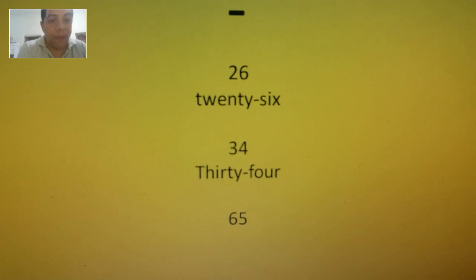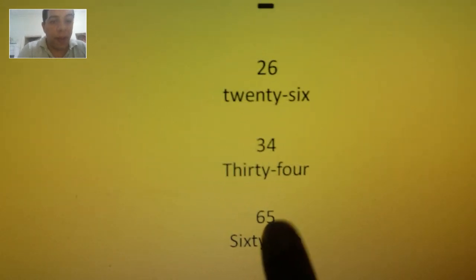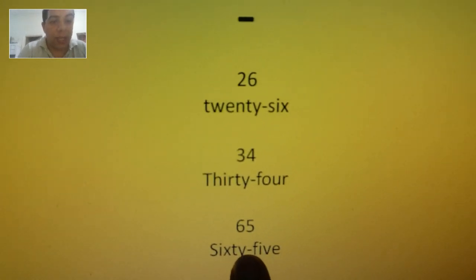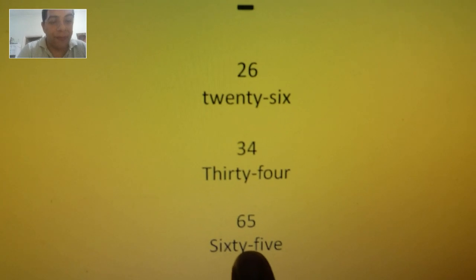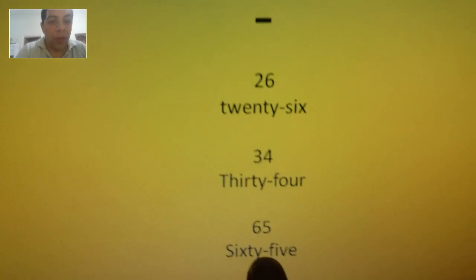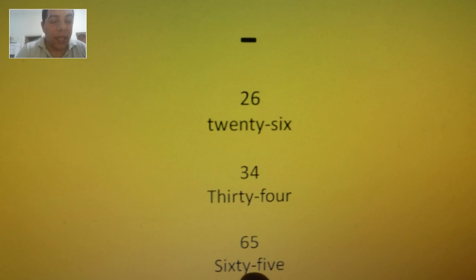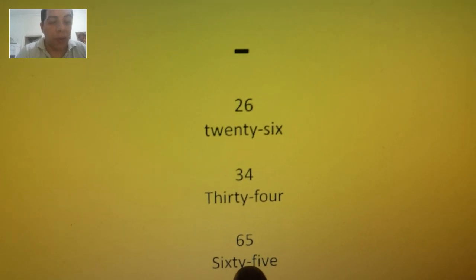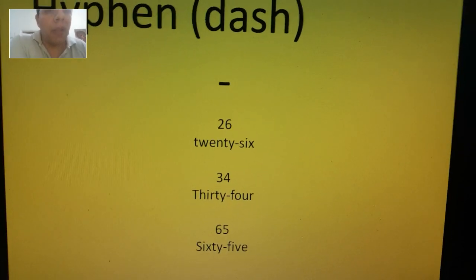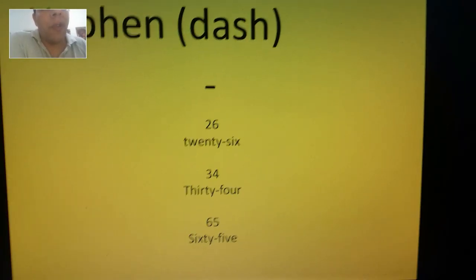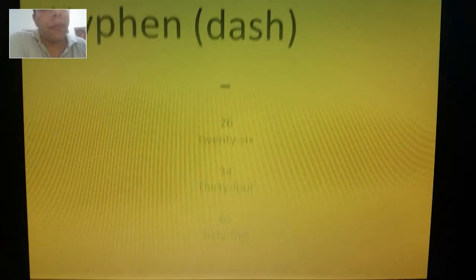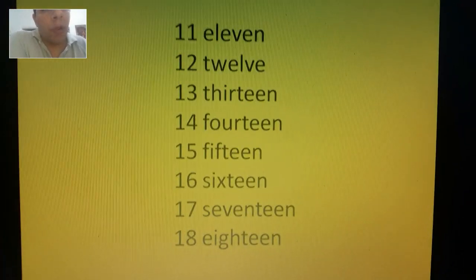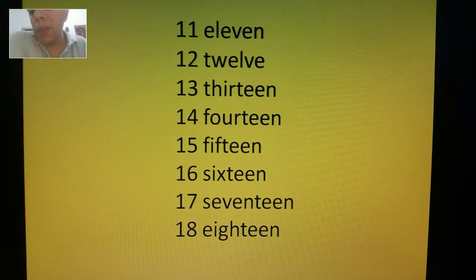Another example, 65—hyphen again, dash, guion. So whenever you use tens and digits, you're gonna use this one. Okay, keep that rule in mind because I'll be evaluating how you handle that.